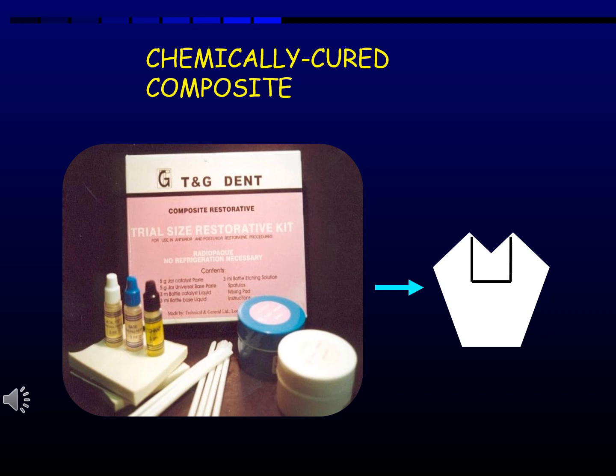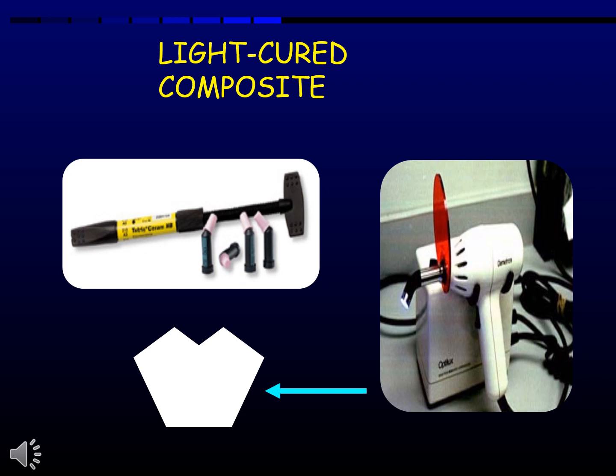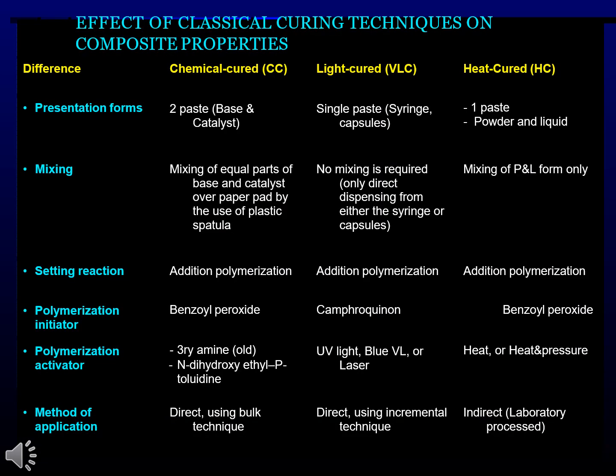Composites can be cured by different techniques. Chemically cured composites use a two-component system. Light-cured composites use photoactivation. Heat-cured composites are also available. Each curing technique has a different effect on composite properties, as shown by comparing chemical-cured, light-cured, and heat-cured results.